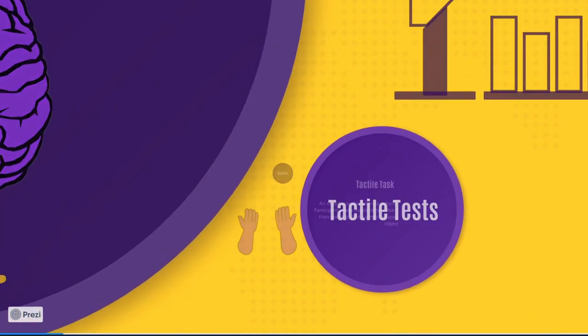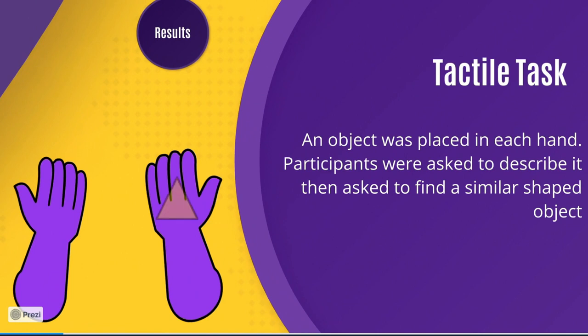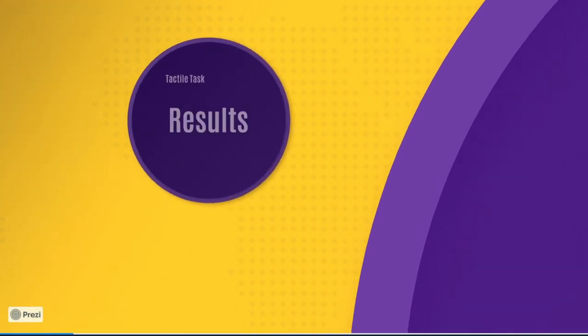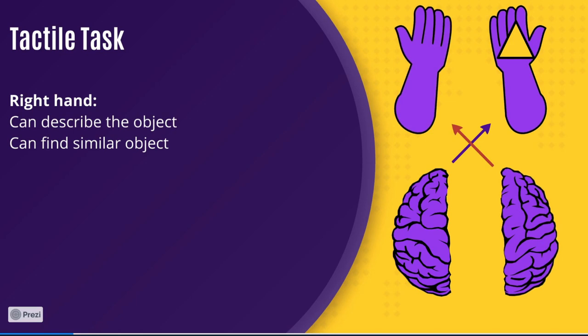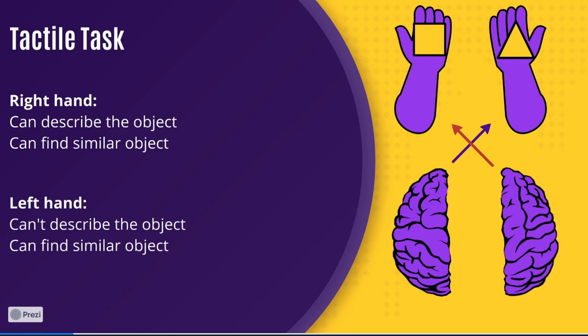Next was the tactile test. First, objects were placed in the participants' right hand, then a different object was placed in their left hand. They were then asked to describe each object as well as find an object with a similar shape on the table in front of them without looking. When the object was placed in their right hand, they had no problem describing it as well as finding similar objects on the table. But when the object was in their left hand and they were asked to describe it, they could only come up with wild guesses as, while they knew there was an object in their hand, their right brain wasn't able to tell their left brain what it was, so they couldn't describe it verbally.